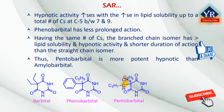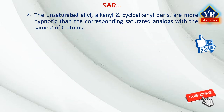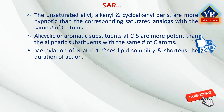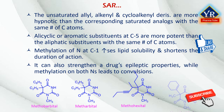Thus, phenobarbital is more potent as a hypnotic than amobarbital. Unsaturated allyl, alkynyl, and cycloalkyl derivatives are more hypnotic than the corresponding saturated analogues with the same number of carbon atoms. Alicyclic or aromatic substituents at C5 are more potent than aliphatic substituents with the same number of carbon atoms. Methylation of nitrogen at position 1 increases lipid solubility and shortens duration of action. It can also strengthen anti-epileptic properties, while methylation on both nitrogen atoms leads to convulsions. Examples include mephobarbital, metharbital, methohexital, and hexobarbital.